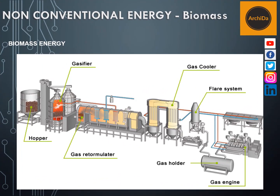Looking at the diagram, you will see that there is a hopper, where you collect all your biomass. From there, it will be transported into the gasifier, where it taps the gases being emitted by your biomass. Then it goes to a gas reformulator, gas cooler, flare system, then the gas engine, where it will be connected to a generator.